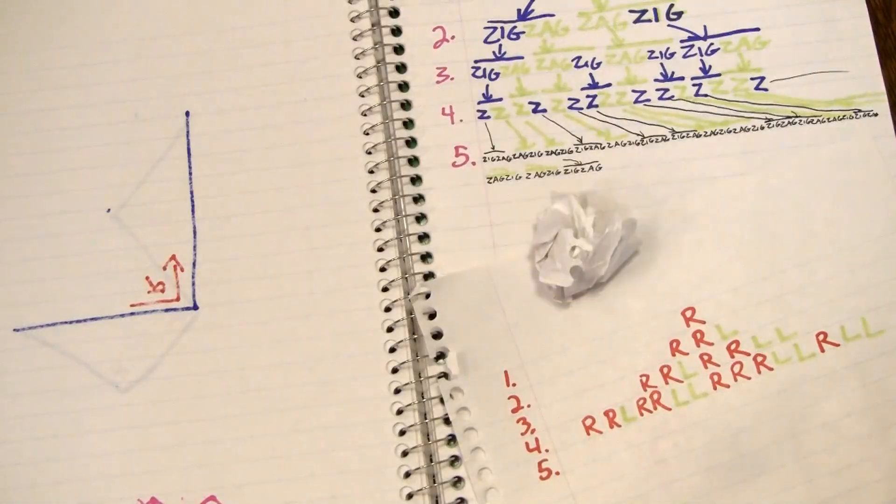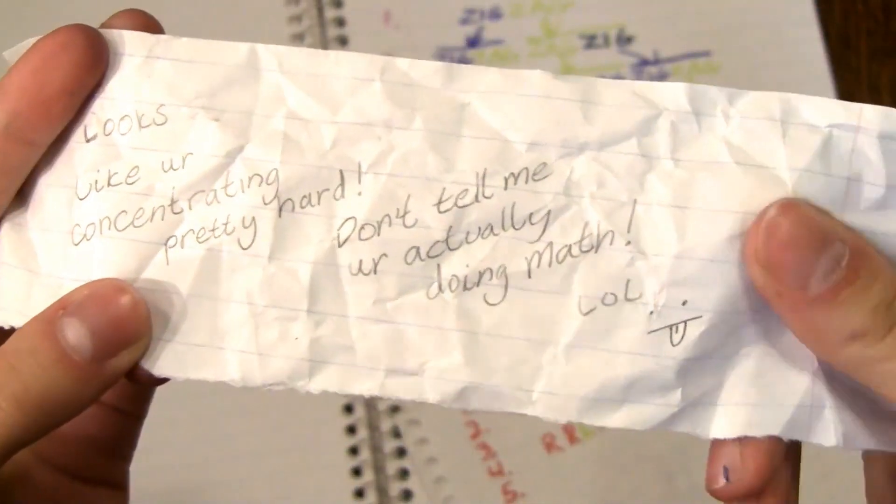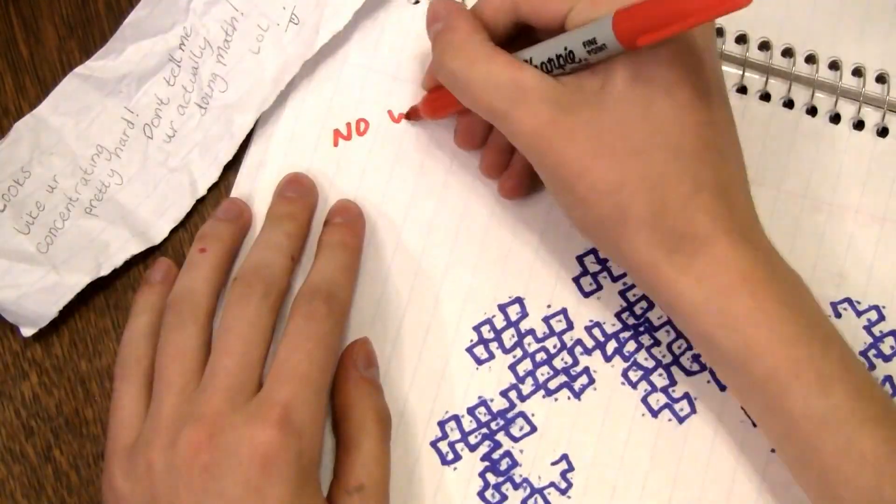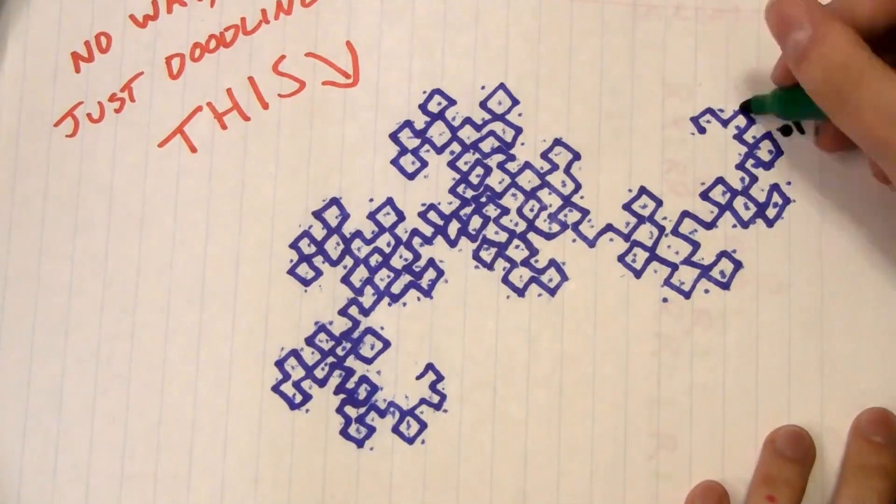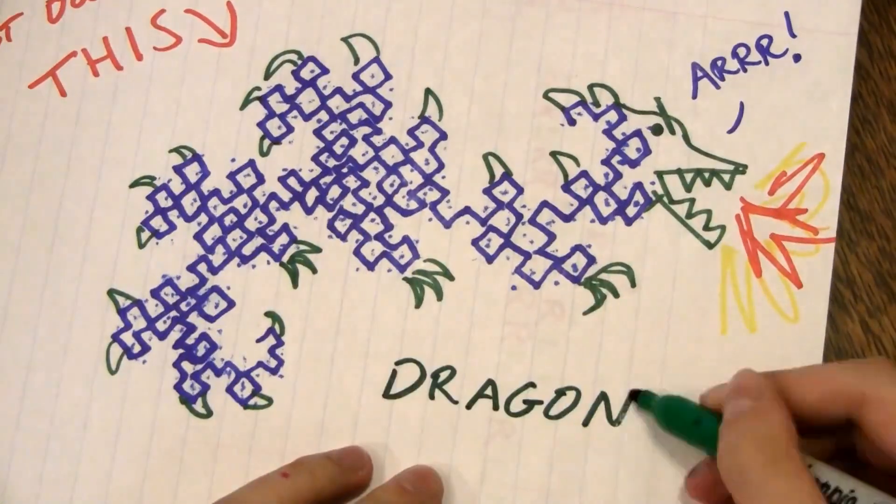Suddenly a note lands on your desk from your friend Sam, who writes, 'Looks like you're concentrating pretty hard. Don't tell me you're actually doing math.' As if. You write back, 'No way. I'm just doodling this.' And just to make extra clear it's not math, you turn it into a dragon and name it the dragon curve.